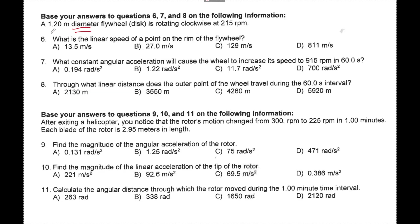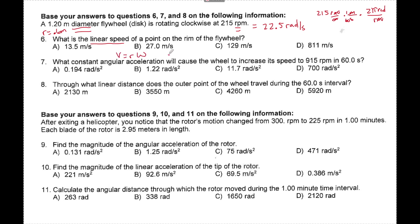Note that this is a diameter, so r is really 0.6 meters, and revs per minute needs to be converted to radians per second. That equals 22.5 rads per second — take 215 revs per minute times 2 pi over 60. Linear speed V equals r times omega: 0.6 meters times 22.5 rads per second equals 13.5 meters per second.